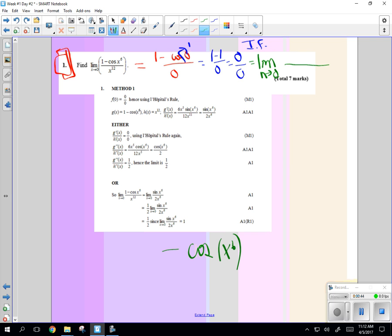Well, that's just going to be negative. Cosine derivative is negative sine x to the 6th. But what's the derivative of x to the 6th? Chain rule. 6x to the 5th. Over the derivative of x to the 12th, which is 12x to the 11th.